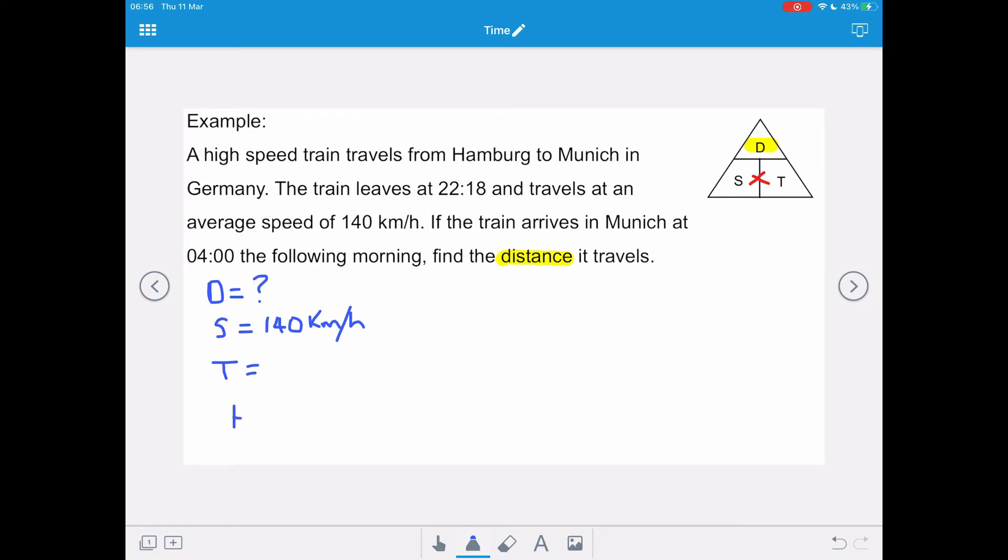So we're going to use a timeline to do that. We've got 22:18 at the start of the timeline, and we've got 4 o'clock the next morning at the other end of our timeline. So we need to go through midnight because it's the following day, and we need to find the nearest hour to 22:18, which is 23:00 hours.